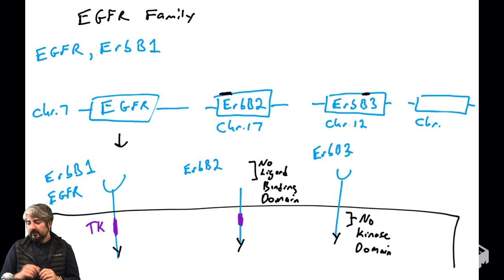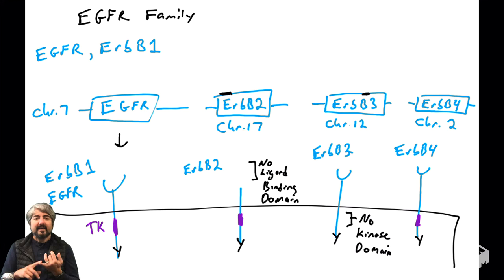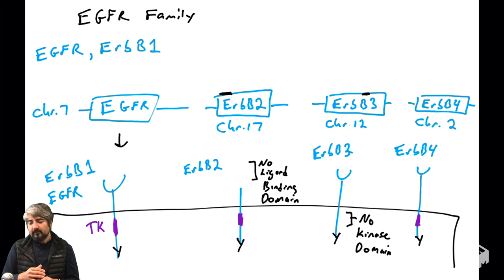On chromosome 2, there's another gene with high homology to all these other genes, producing a protein very similar in structure — called ERBB4. ERBB4 actually does contain a ligand binding domain and a tyrosine kinase domain. All four of these genes code for proteins that look very similar, with differences between them, and these genes are members of what we call the EGFR family.